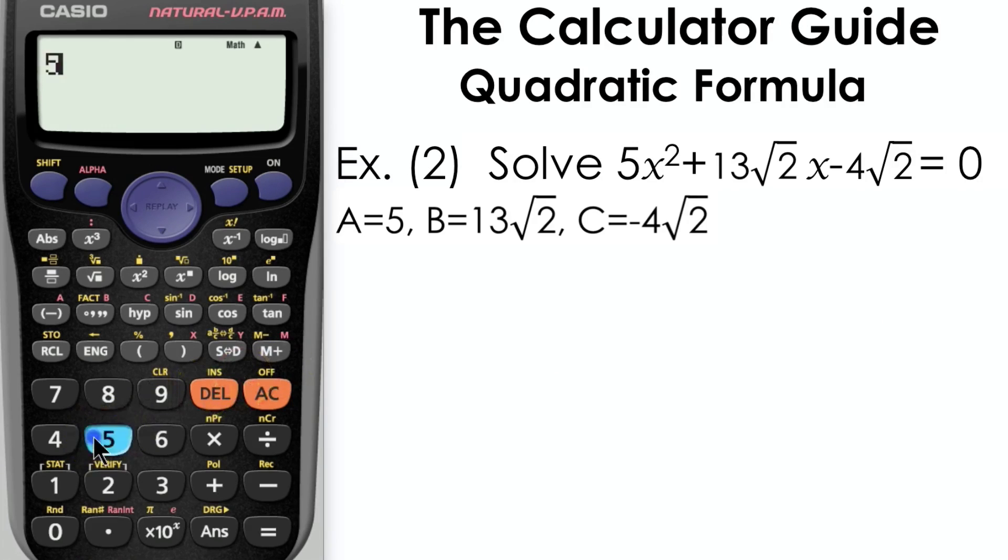In this example, the value for a is 5, b equals 13√2, and c equals -4√2. So just be careful to input this correctly. Don't forget to use the minus in brackets to input any negative values.